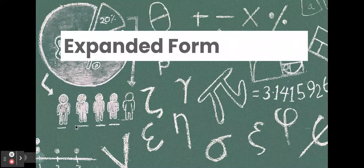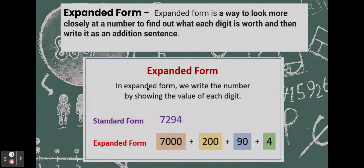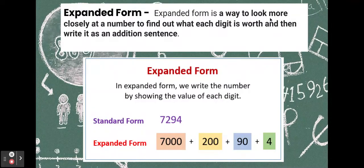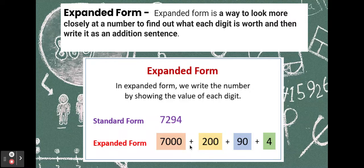Expanded form. Remember expanded form with addition? Expanded form is a way to look more closely at a number to find out what each digit is worth, and then write it as an addition sentence. We are going to be working with expanded form, not necessarily in this way, but remember, we're going to be adding things together.